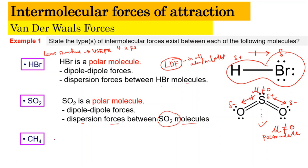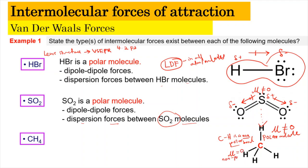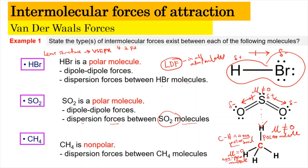For CH₄, drawing the Lewis structure gives four C-H bonds arranged symmetrically. The C-H bond is a non-polar bond, so there is no bond dipole and the dipole moment μ equals zero, making CH₄ a non-polar molecule. Since it is non-polar, CH₄ can only have London dispersion forces between CH₄ molecules — it cannot have dipole-dipole forces.